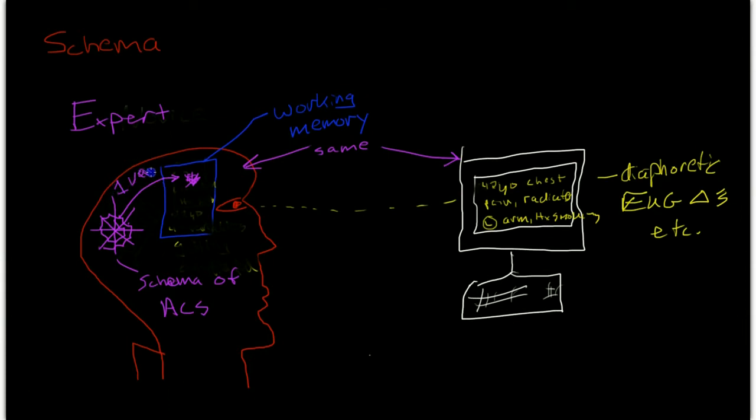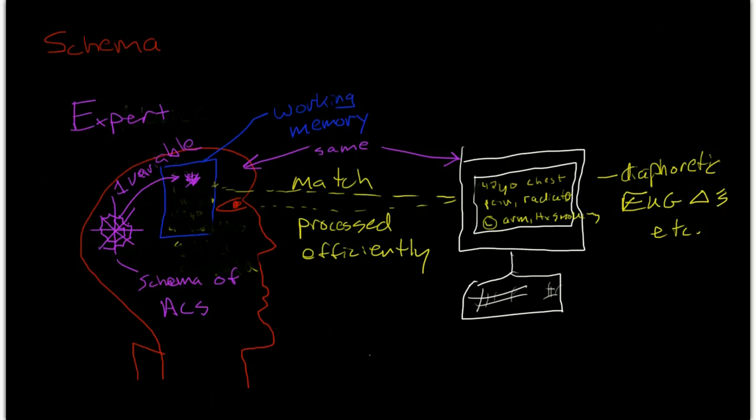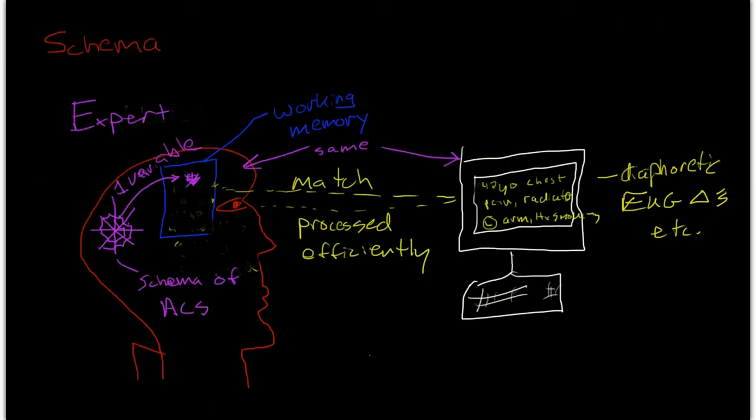be connected with all the little chunks that the expert is seeing in the information that is being delivered through the e-learning course. So, the expert is finding matches and is able to process the information much more efficiently because the schema is able to create connections between dozens of variable points and combine them into one single variable point.